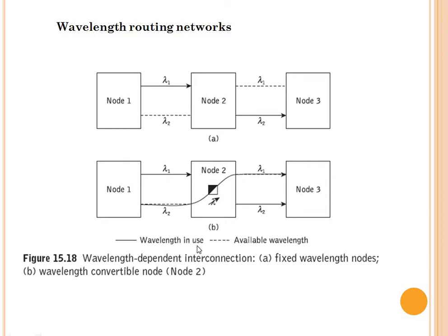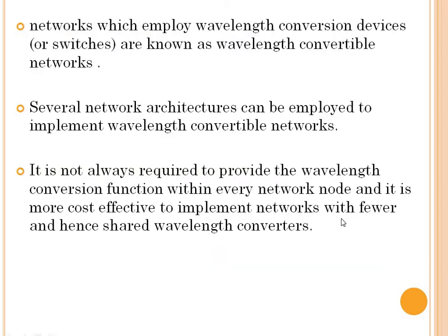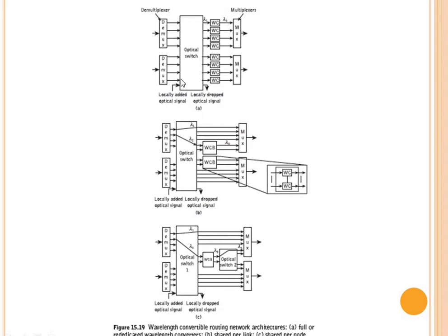Several network architectures can be employed to implement wavelength convertible networks. Three different WDM network architectures employing wavelength conversion are shown in the figure. The first is full wavelength conversion, where each network node utilizes a dedicated wavelength converter. Here all the wavelength channels at the output of the optical switch will be converted into their compliant wavelength channel by the appropriate wavelength converter. For example, lambda 1 is converted to lambda 2.